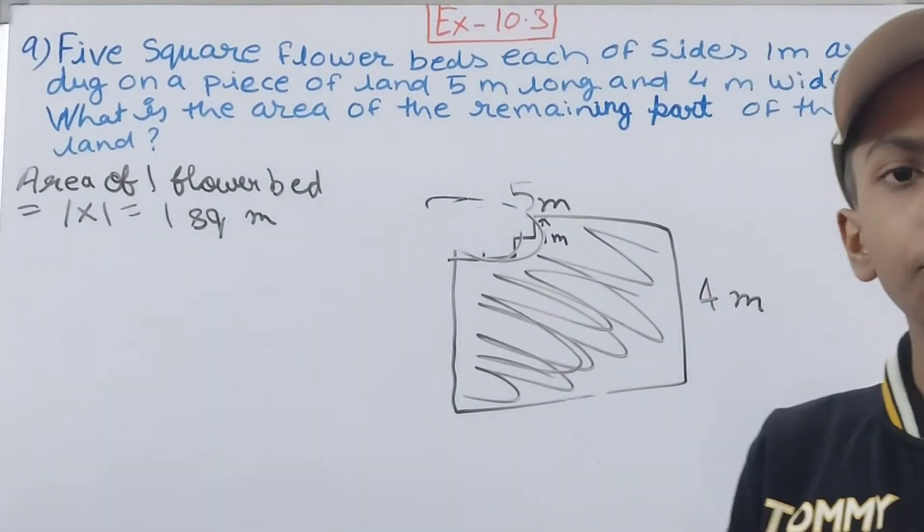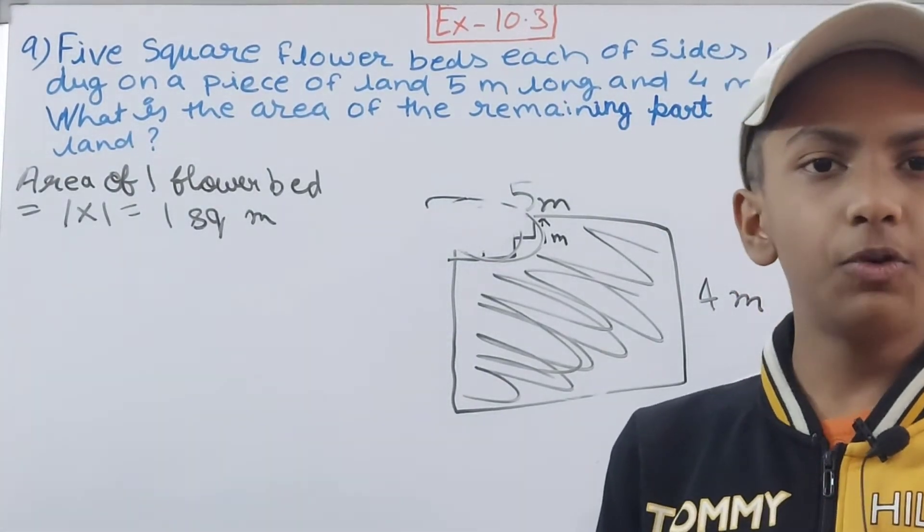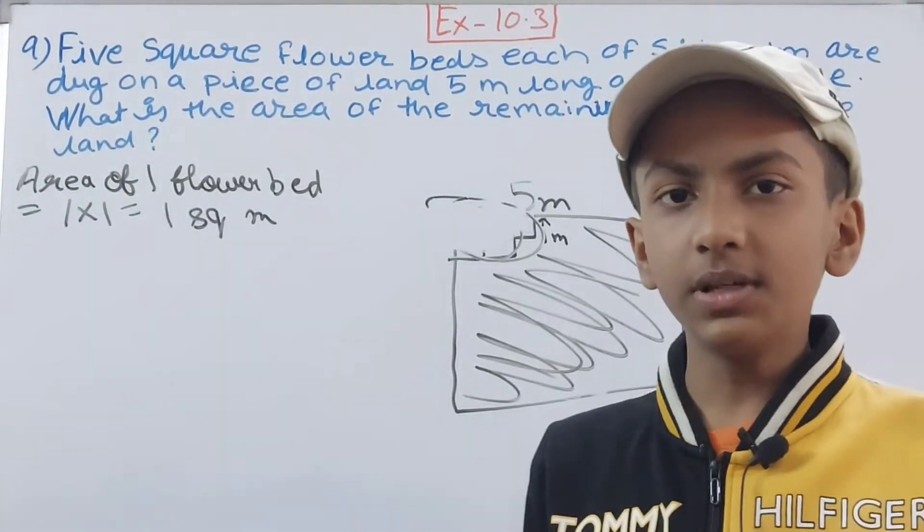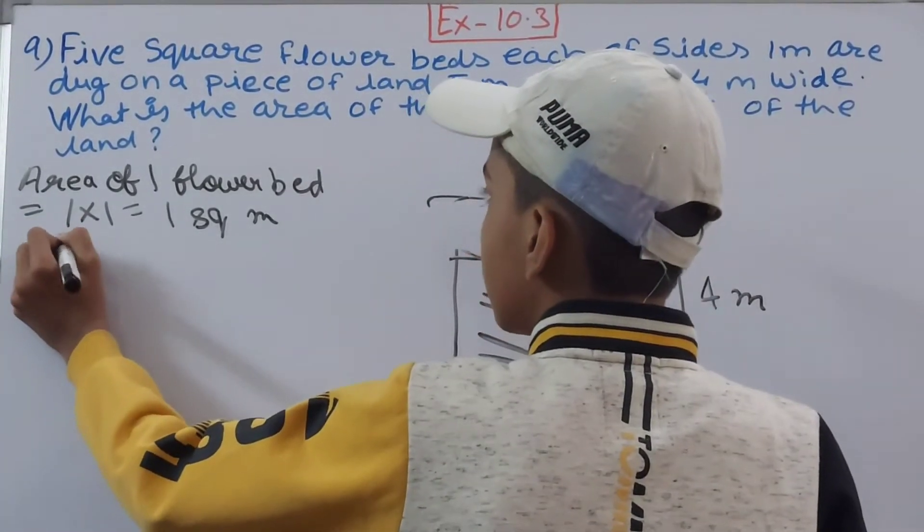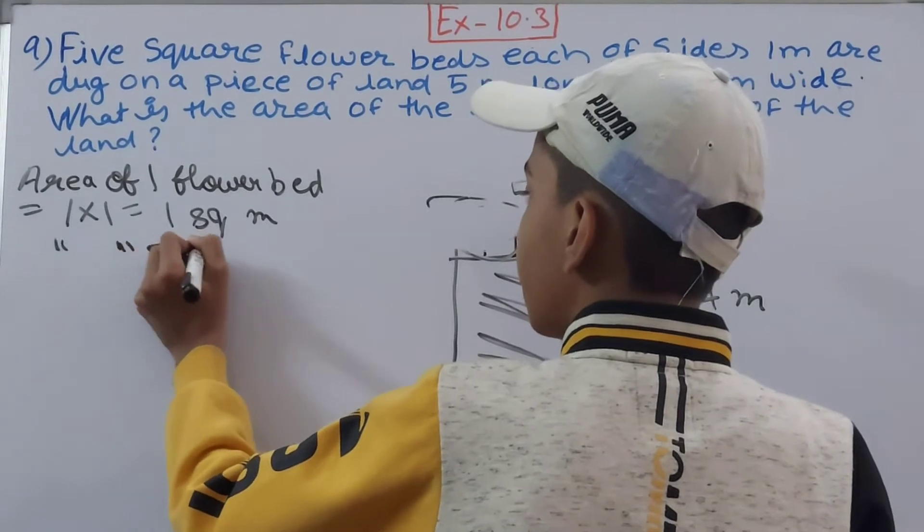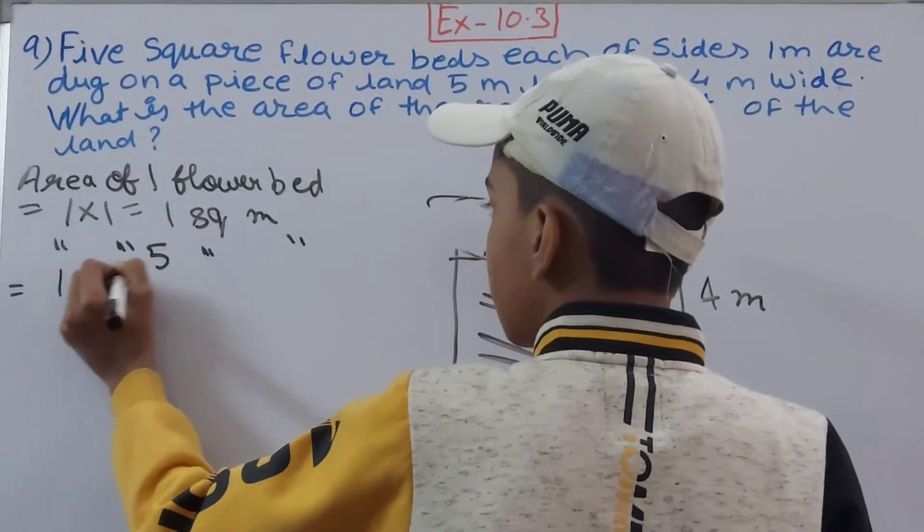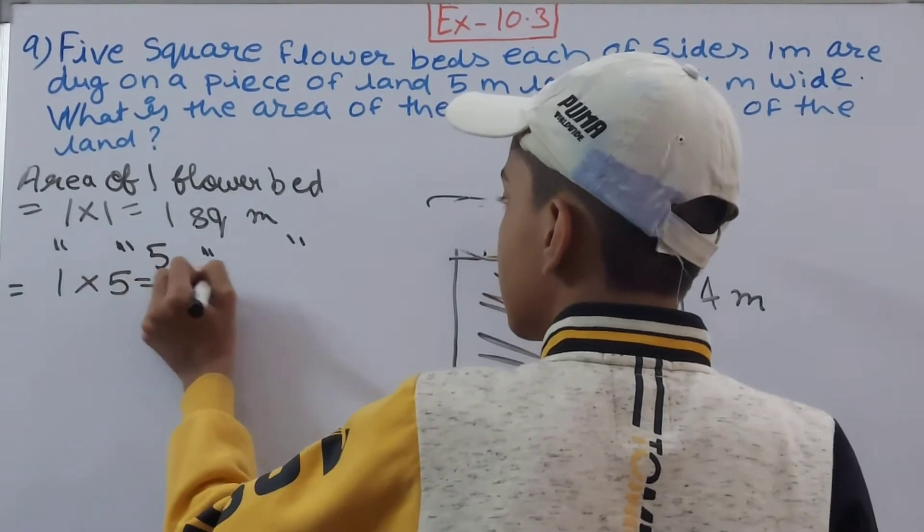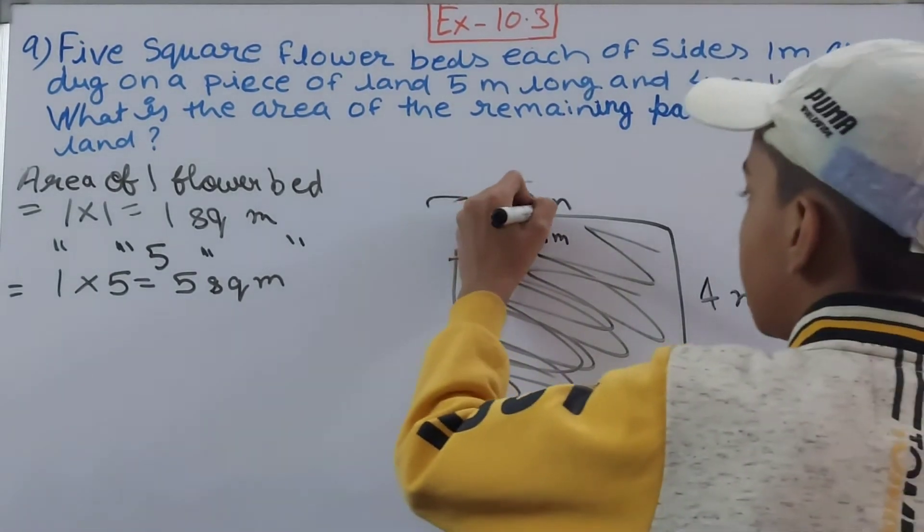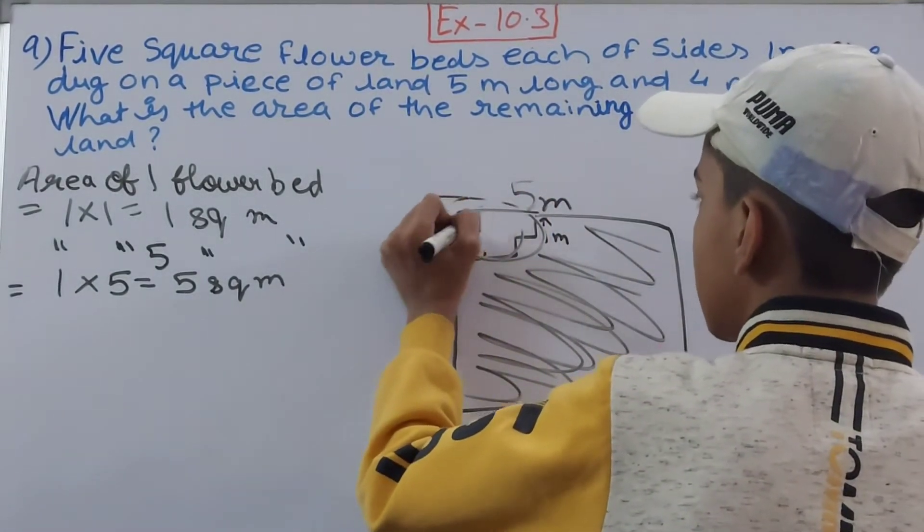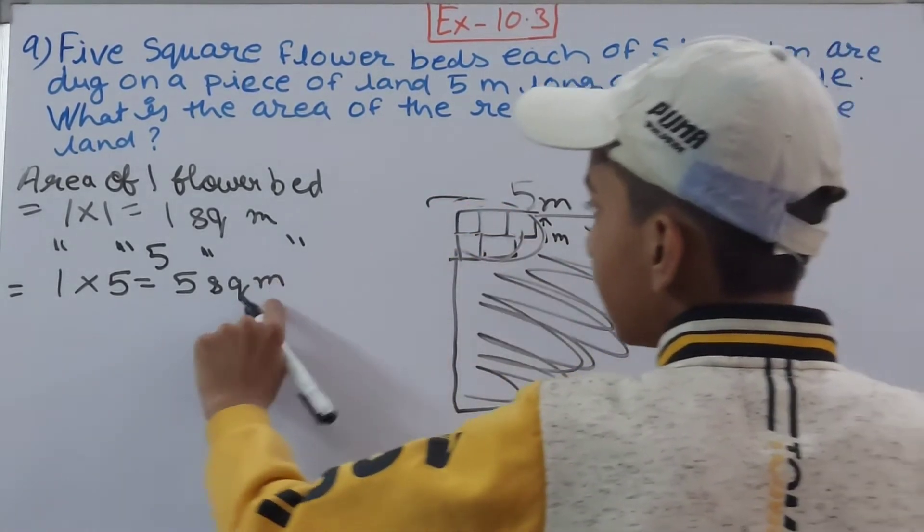Now we have to find the area of five such flower beds. What we will do? When one is given and you have to find for many, you always multiply. So area of five flower beds, that will be 1 into 5, that is 5 square meters. This is the area of the five flower beds.